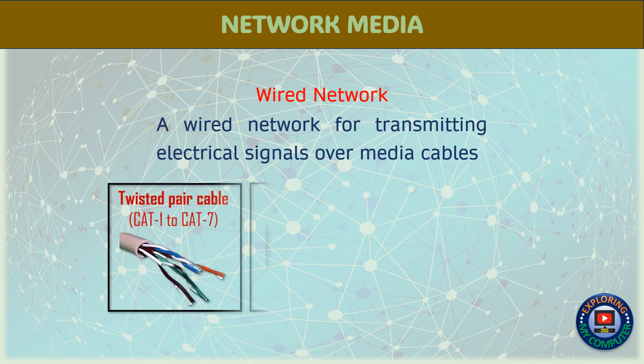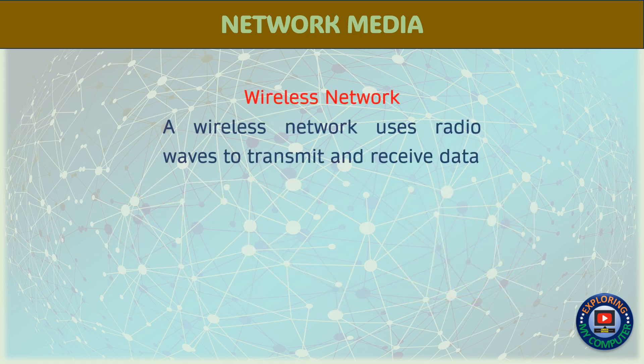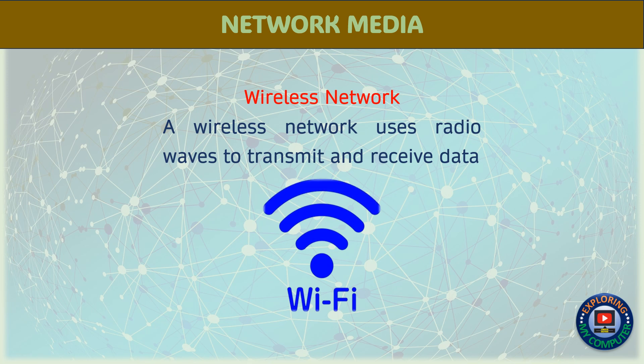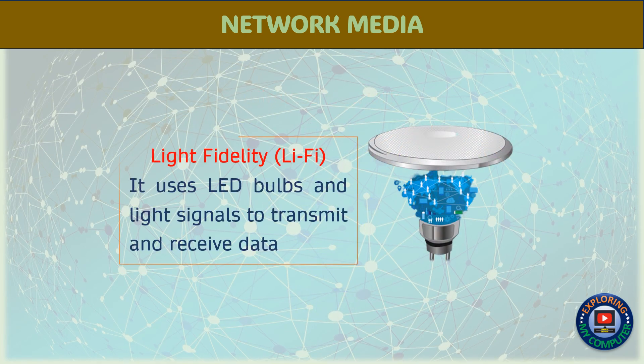A wired network is for transmitting electrical signals over media cables. A wireless network uses radio waves to transmit and receive data. Light Fidelity uses LED bulbs and light signals to transmit and receive data.